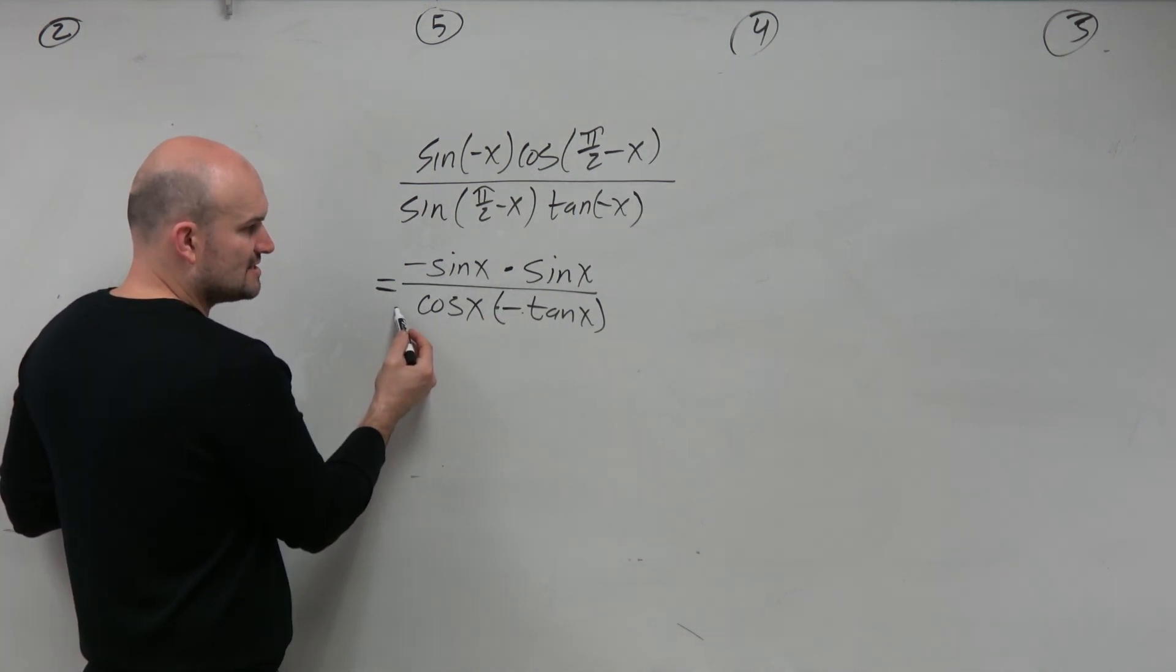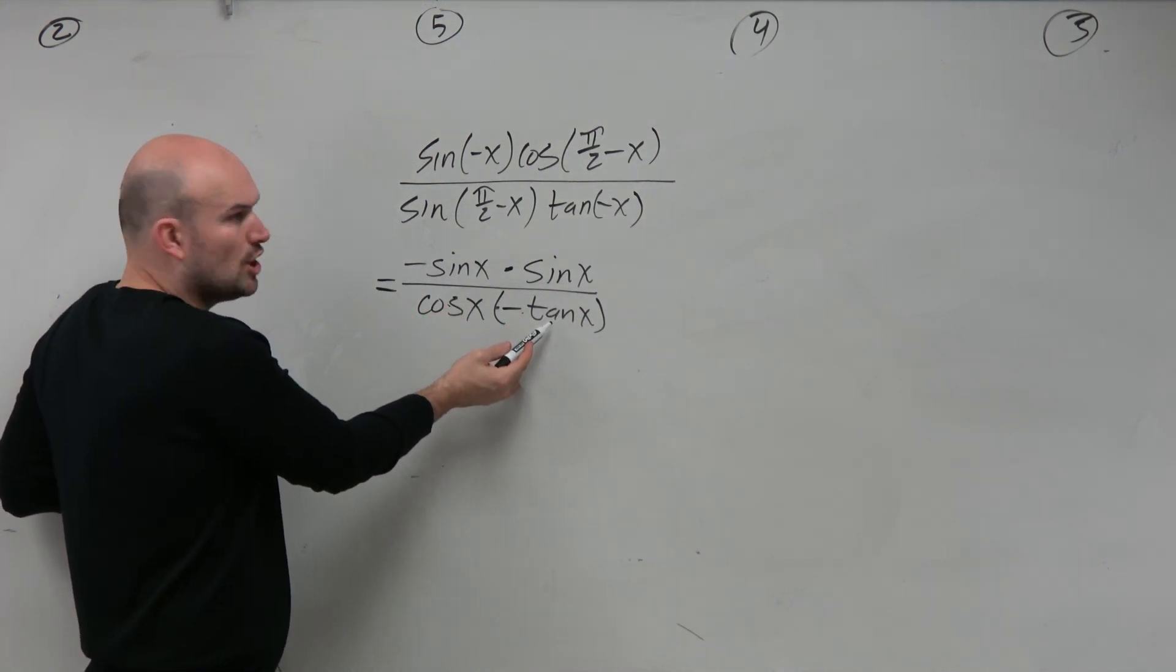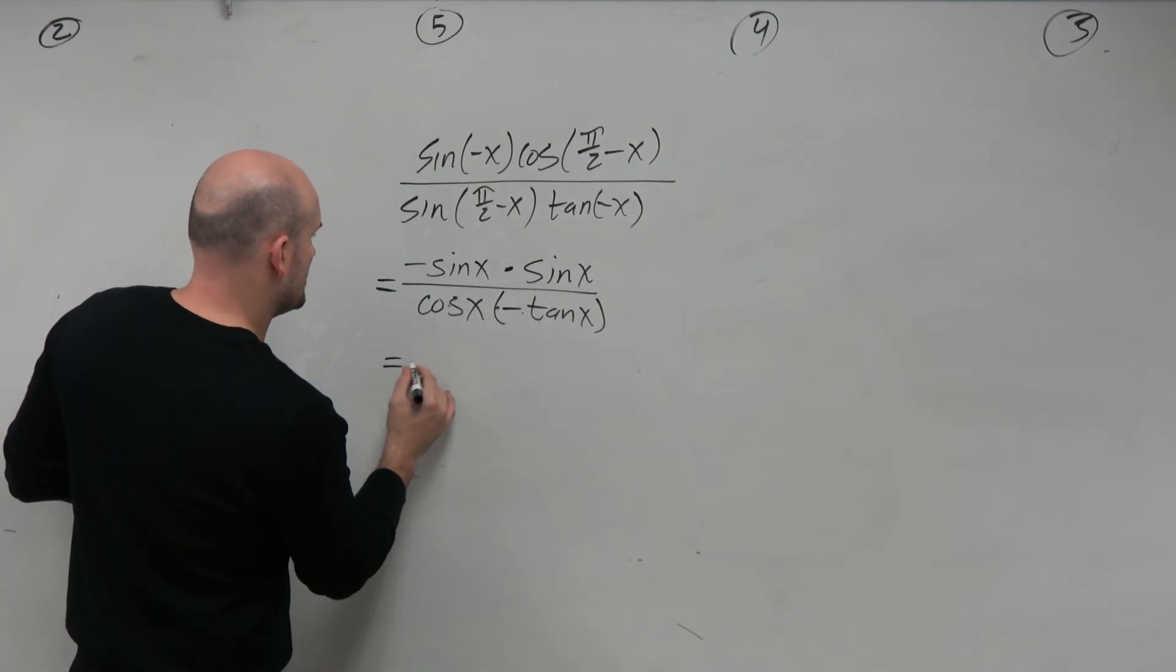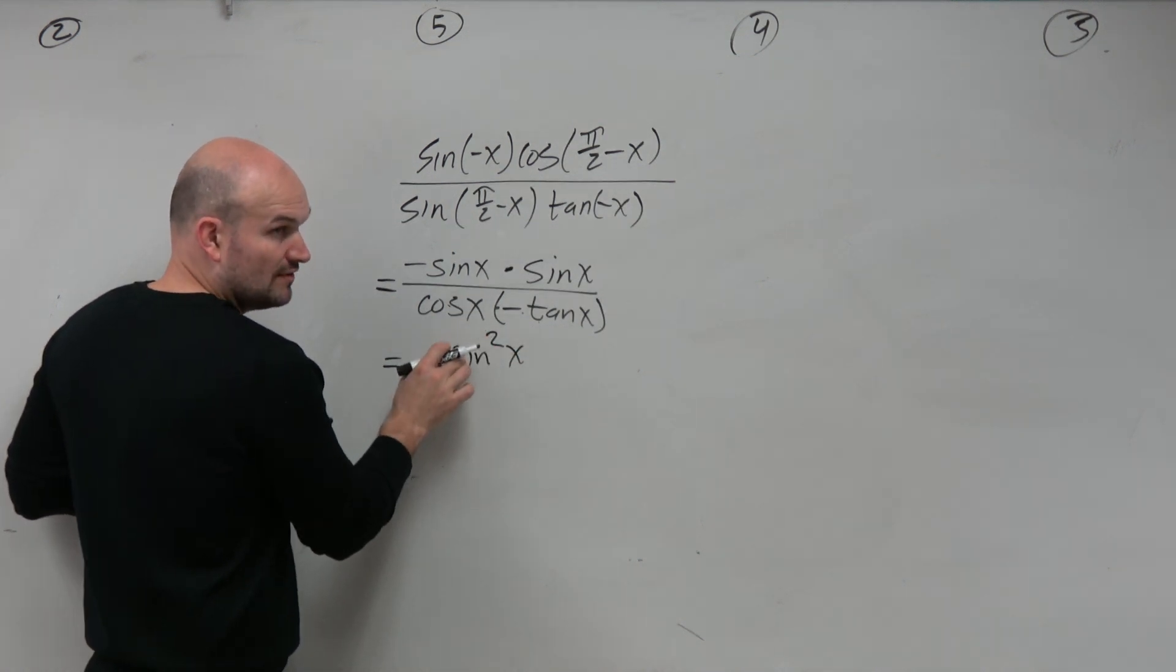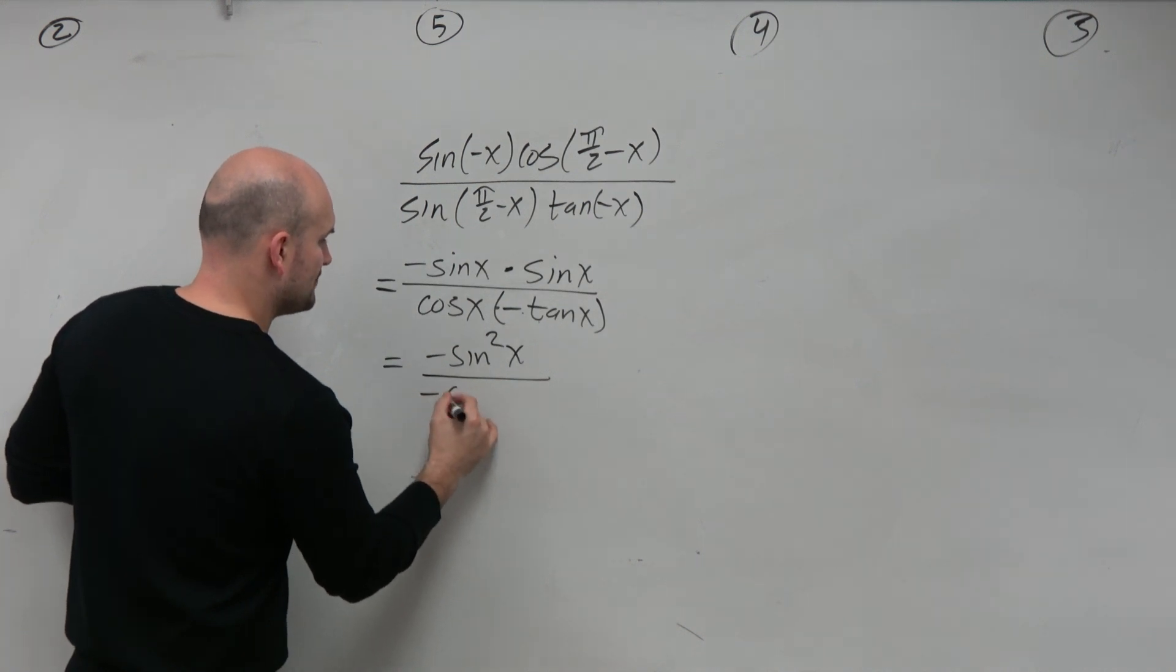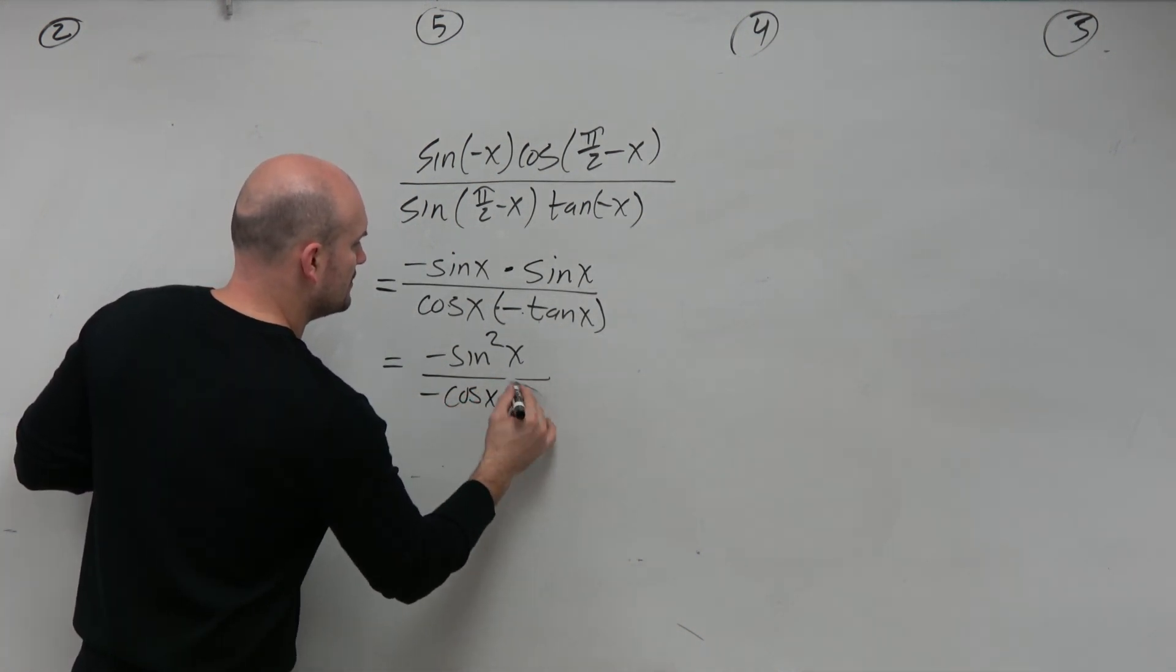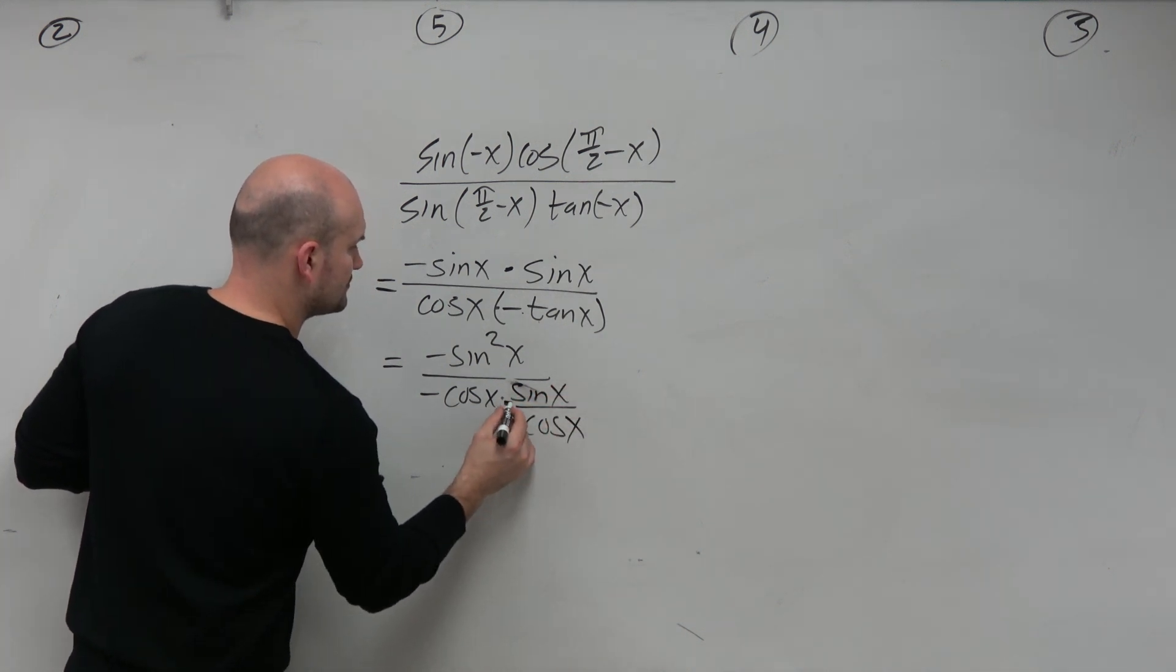And then since I need to probably simplify this with cosine, why don't I use the quotient identity? Right? You guys agree? Using 1 over cotangent is probably not going to help me in this problem. Right? So what I'll do is I'll put this as a negative sine squared of x. Make sure you have the square for the sine, not on the x. Divided by, I'm putting the negative in front. Cosine of x times sine of x over cosine of x.